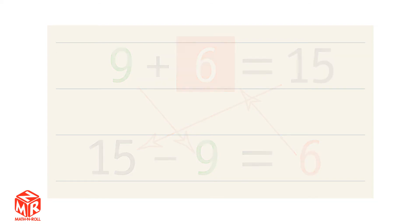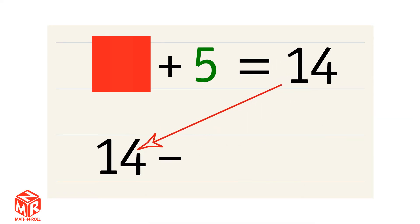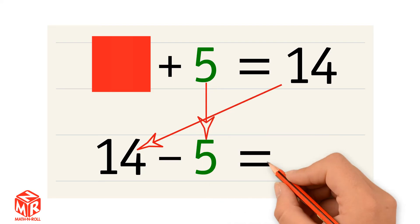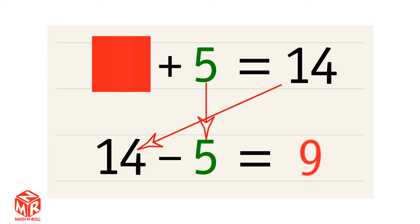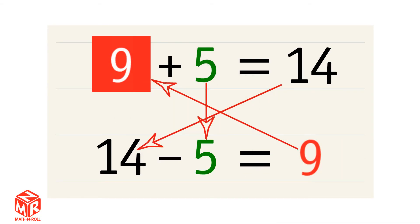Let's try another one. An unknown number plus 5 equals 14. To find the unknown number, we take the whole, 14, and subtract the part that we know, 5. 14 minus 5 equals 9. So 9 is our unknown number. 9 plus 5 equals 14 and 14 minus 5 equals 9 are related facts.